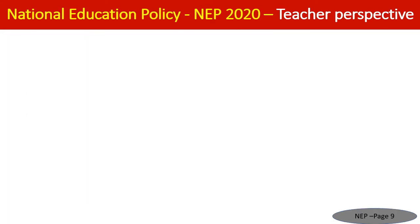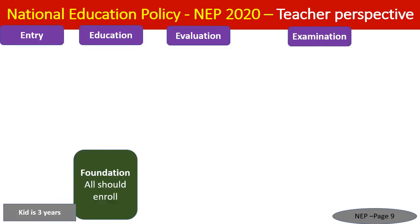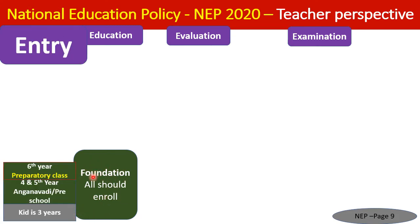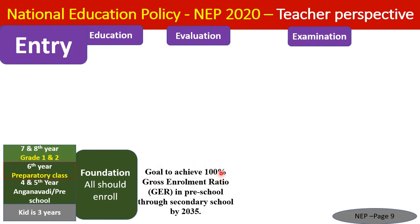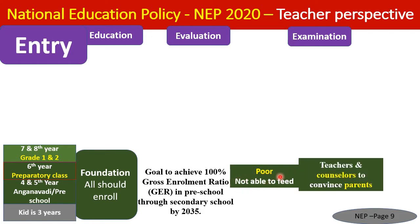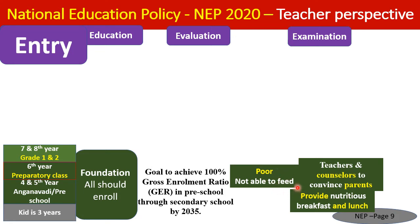To achieve 100% enrollment, after age three all kids should be admitted to the foundation level. The main challenge in rural areas is families who cannot feed their children. NEP 2020 says to use teachers and counselors to convince parents by promising nutritious breakfast in addition to the midday lunch already provided.